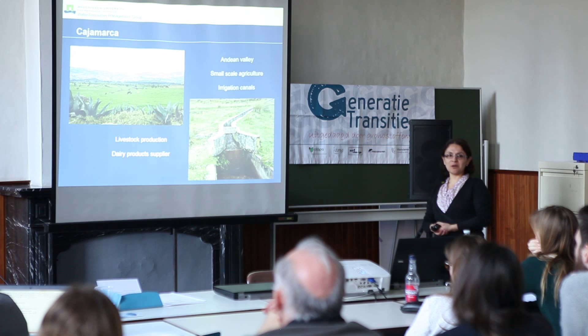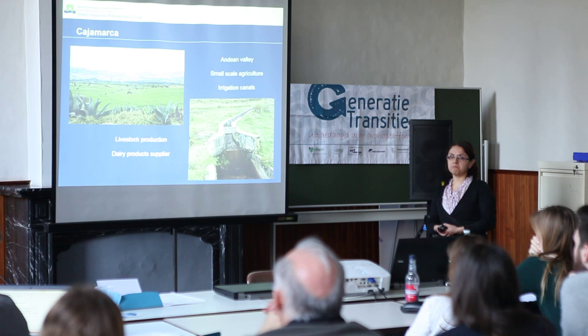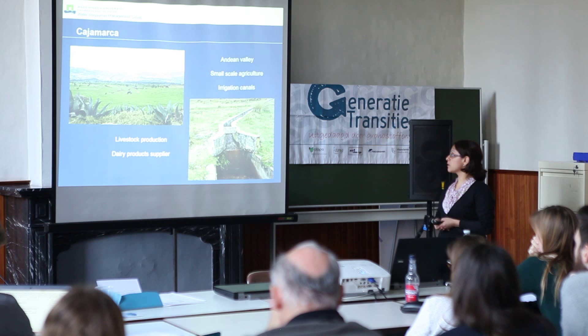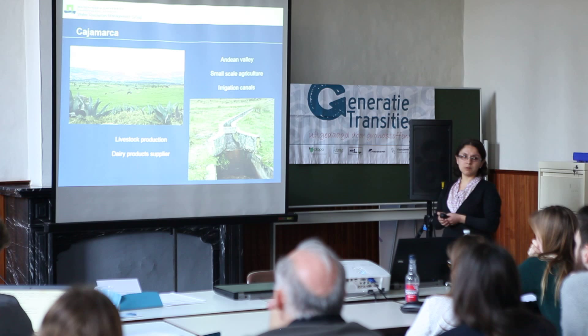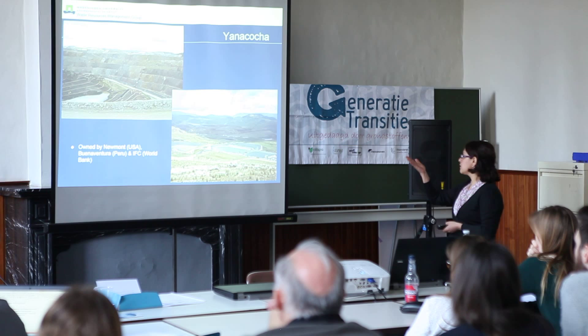This is Cajamarca — the professor already showed us some photos. It's in the Inca Valley, one of the main producing regions in the country. It's very important in terms of dairy production and livestock production. Mainly there is small-scale agriculture for self-consumption, and this agriculture depends on the irrigation canals constructed by people in the area.